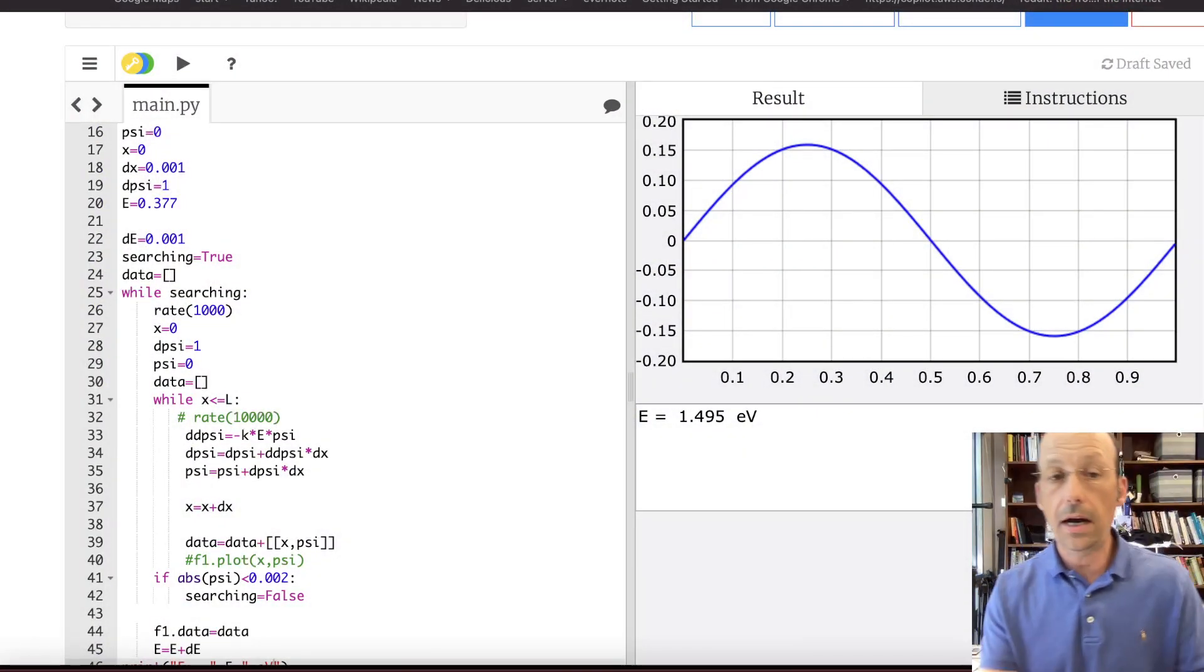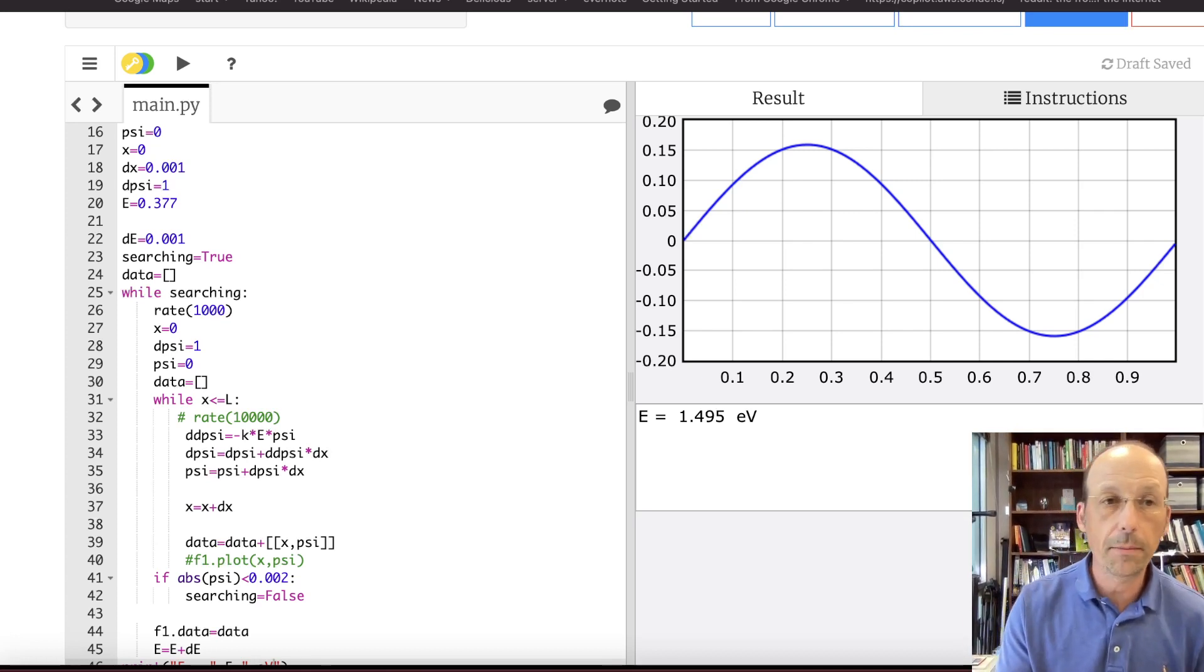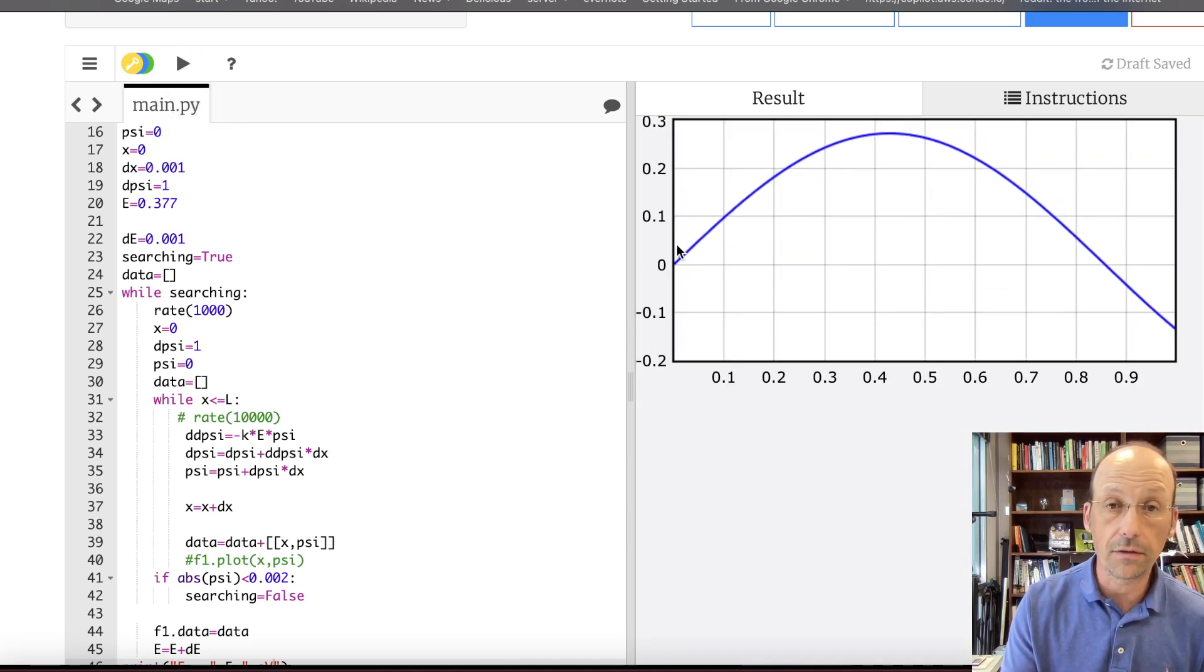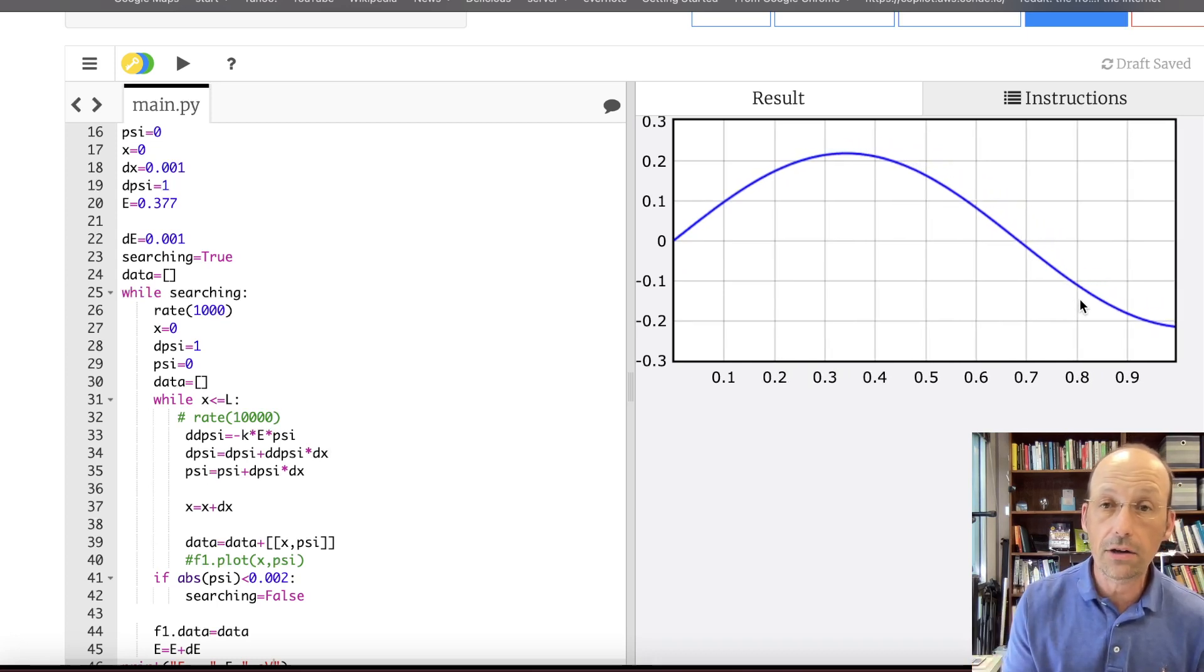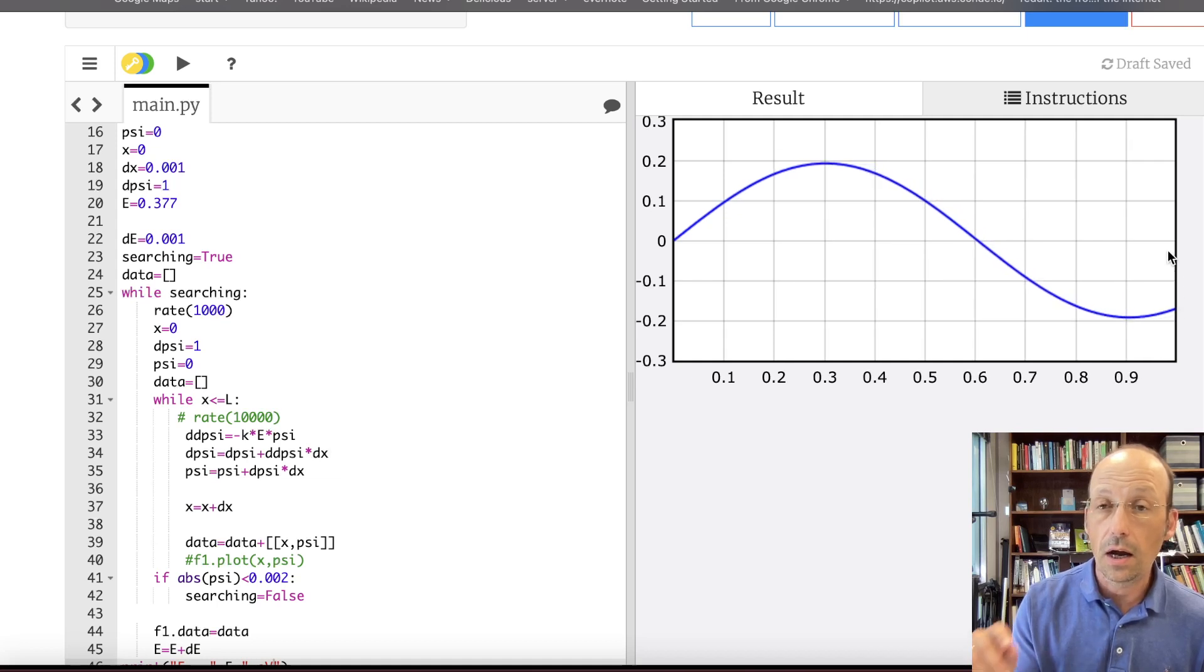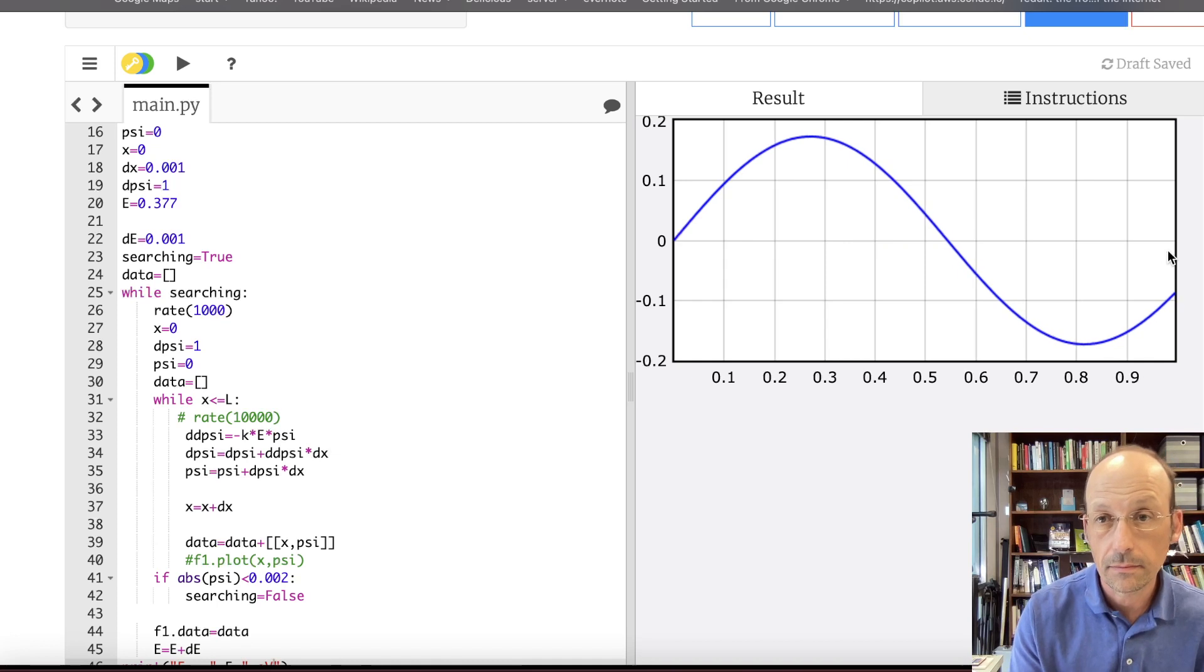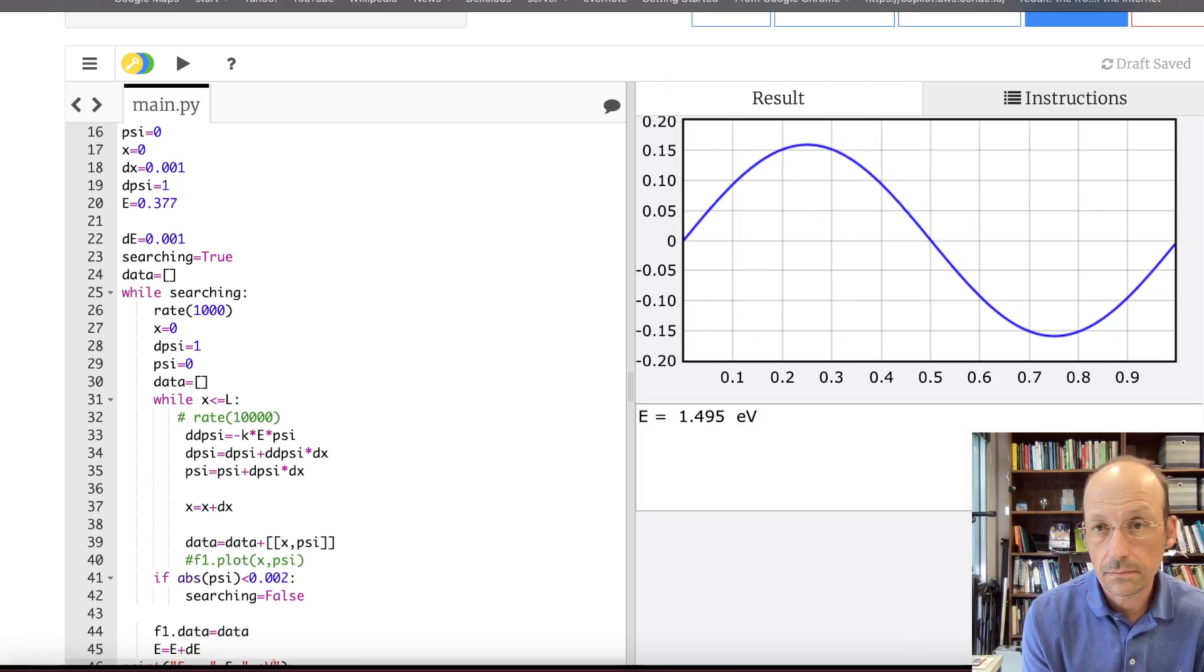So here is my computer code. This is not the first. Let me go ahead and run this. So you can see this is not the ground state energy level. This is the second energy level. You can see that I'm increasing my value of E and rerunning the calculation until the wave function right here gets back to zero. And I have my well width of one.